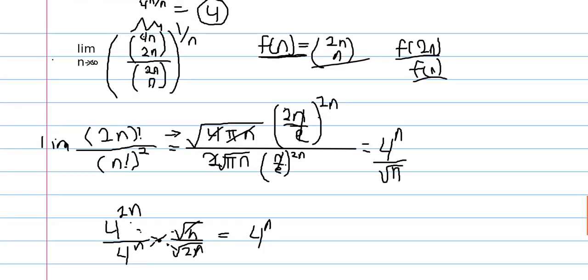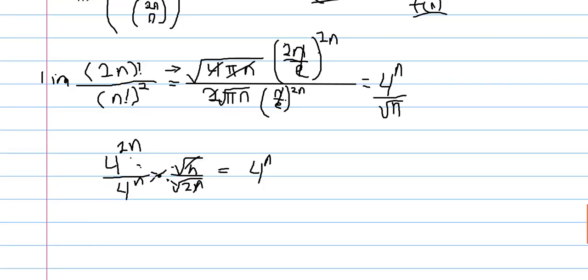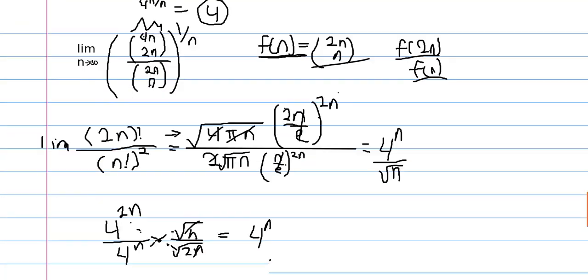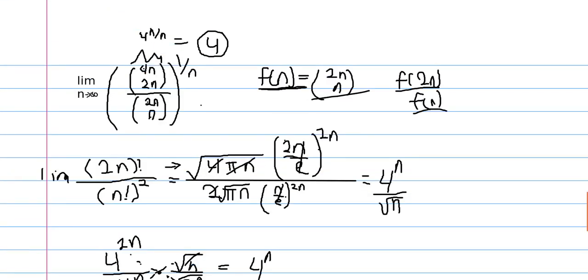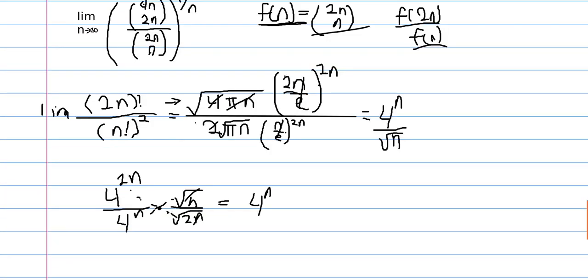So in short, any time you see a limit with a factorial in it, be it a combinatorial function or just any type of factorial, remember Sterling's formula. Thank you for watching, and I'll see you next time.